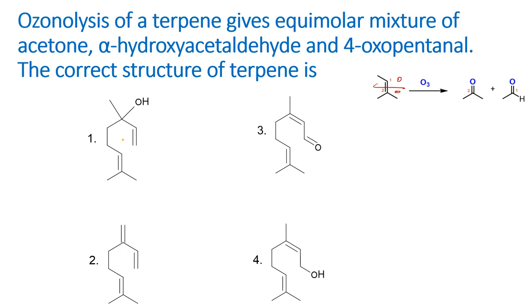In these options, which are all different types of terpenes, we have to look out for the alkene positions and then try to do the same kind of splitting pattern for the ozonolysis reaction. For understanding reductive and oxidative workup of ozonolysis, there is a separate video — kindly watch that for the basics.